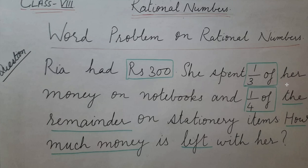She spent one-third of her money on notebooks and one-fourth of the remainder on stationery items. The question is: how much money is left with her? When we talk about 'of', always remember that 'of' means multiplication. One more thing: the word 'remainder' means we have to find the remaining money first, and then the amount left with her.